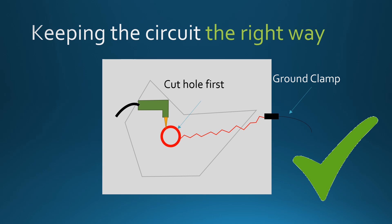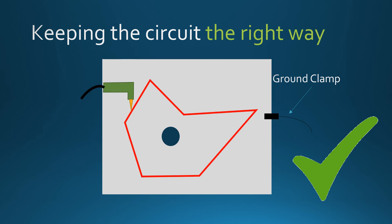Cut the inner hole first. This is the correct way. Now you can cut the outer profile. Notice the outer profile is still properly grounded.